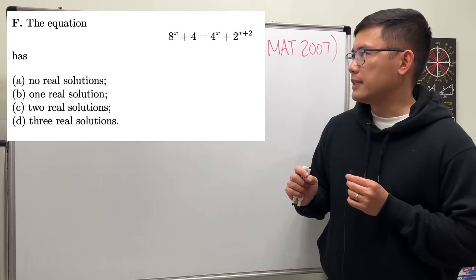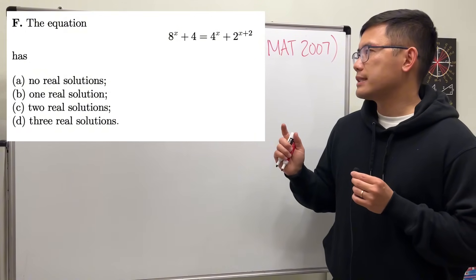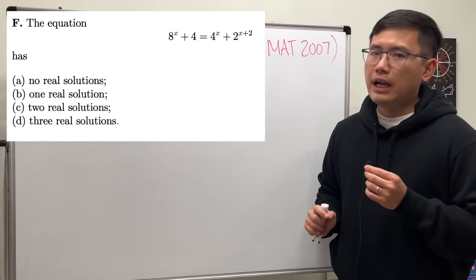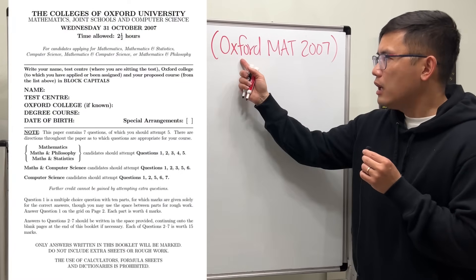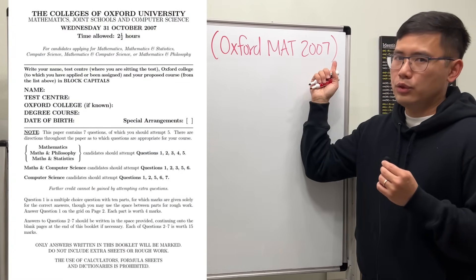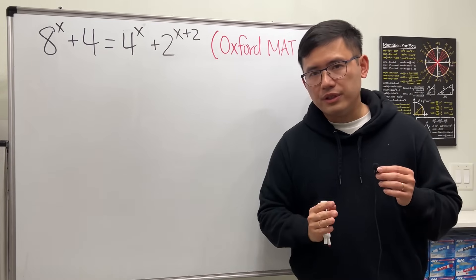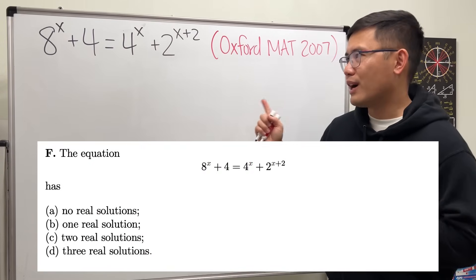The equation 8^x + 4 = 4^x + 2^(x+2) has how many solutions? This exponential equation is from the Oxford University math admission test back in 2007, and you know the deal. Please pause the video and try this first.